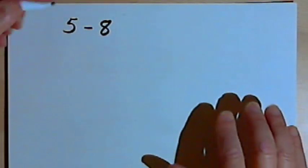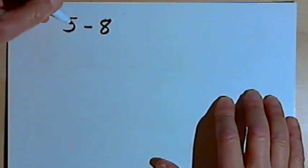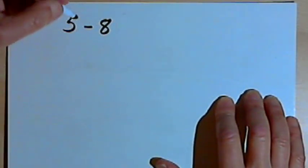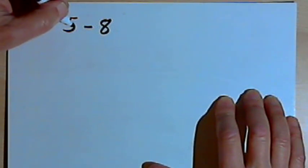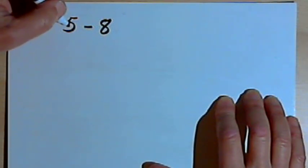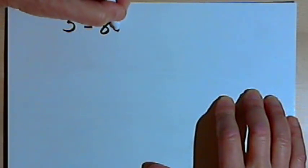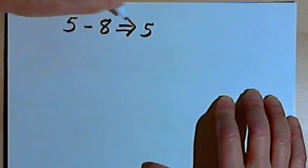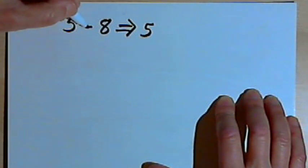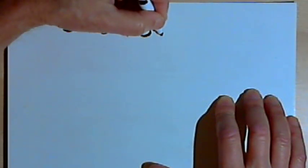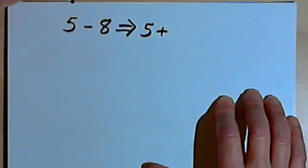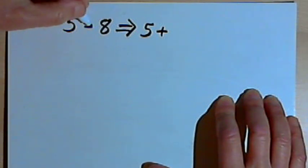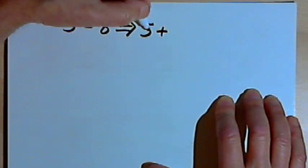Here's the first problem: 5 minus 8. That's a subtraction problem. What I'm going to do with subtraction problems is turn them into addition problems. I'll start out with a 5, and instead of a minus sign, I'm going to use the opposite of the minus sign, which is a plus sign. So instead of 5 minus, I've got 5 plus.